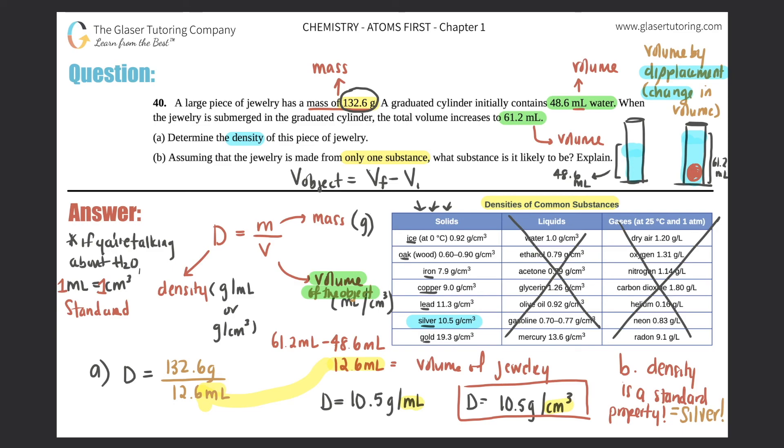This would be made out of silver. Explain: because the density is the same number, it's the same standard property, all silver—if it's a pure substance—will have that same density.